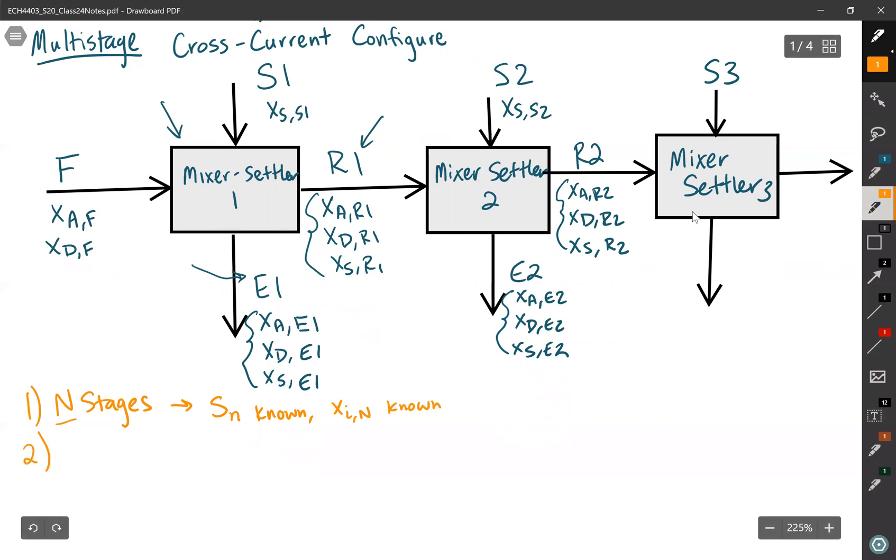The second type of problem is the one that asks you to solve for a solvent flow rate. And this type of problem, you would then know the number of stages, N is known, and Xi of n is also known.